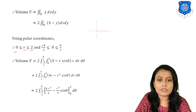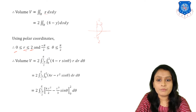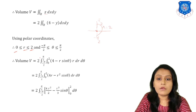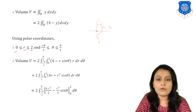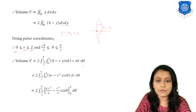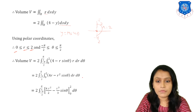Converting to polar coordinates: y equals R sin(theta), and dx dy becomes R dr d-theta. So we have 2 times the integral from minus pi/2 to pi/2, and R from 0 to 2, of (4 minus R sin theta) times R dr d-theta. Multiplying R inside gives (4R minus R squared sin theta) dr d-theta. Integrating with respect to R: 4R squared over 2 minus R cubed over 3 times sin theta, evaluated from 0 to 2.